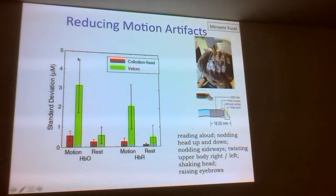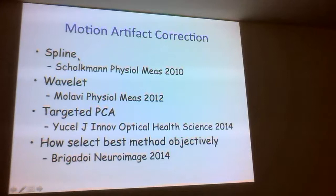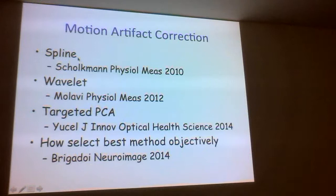Various methods can try to correct motion artifacts to recover the underlying signal when you don't want to throw away trials. There are many different ways of trying to correct motion artifacts, but then you need an objective way of deciding which method is best for your data, because depending on the experiment you'll have different types of motion artifacts. There's been a lot of really good progress in the last few years — you can recover like half of your trials, and that's a really big deal.